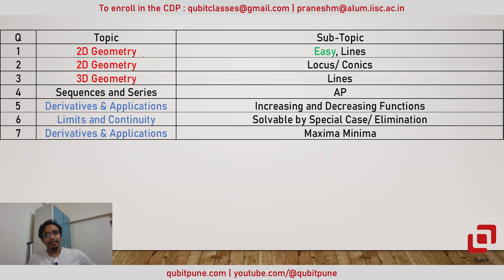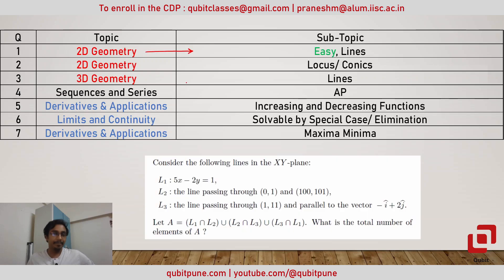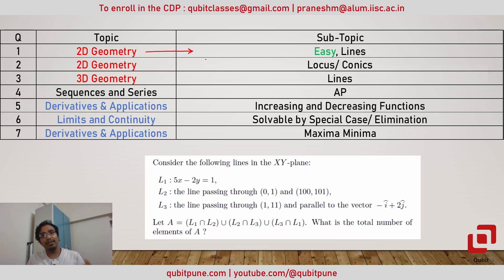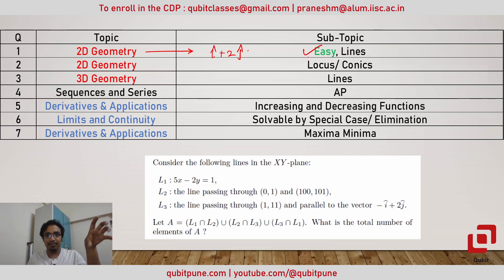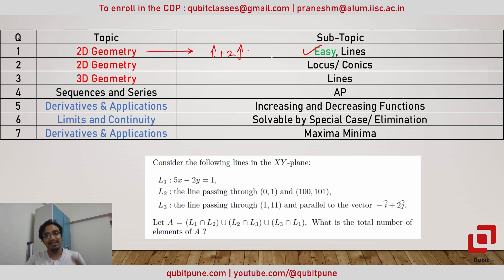In the first question on 2D geometry, three lines were given, and in the third line, a vector was given to state the slope — something like i-cap minus 2j-cap. This question was very easy. All you had to determine was the number of points of intersection of the three lines. The answer turns out to be three because all three lines are non-concurrent — they intersect at two different points. So it was a pretty basic question.